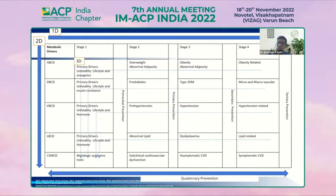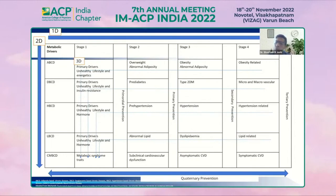Then we have HBCD — hypertension or high blood pressure-based chronic disease — where there is pre-hypertension, hypertension, and hypertensive complications. Then we have LBCD — lipid-based chronic disease — with abnormal lipids, dyslipidemia, and lipid-related complications. These terms were devised by Professor Jeffrey Mechanic, medical director and past president of the American College of Clinical Endocrinology. CMBCD is cardiometabolic-based chronic disease — the older metabolic syndrome terminology — with subclinical atherosclerotic cardiovascular dysfunction, asymptomatic CVD, and symptomatic CVD.